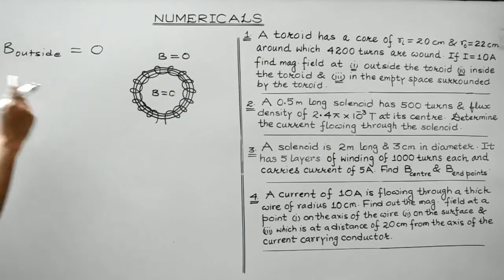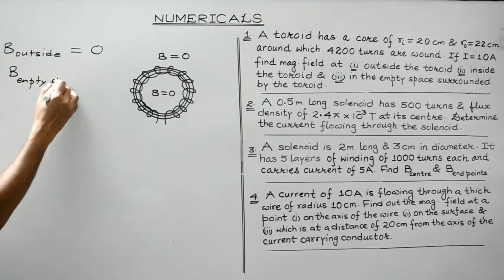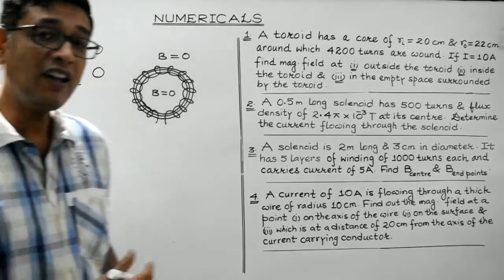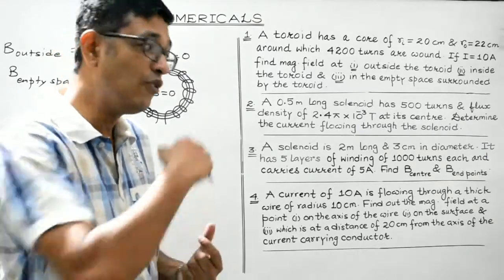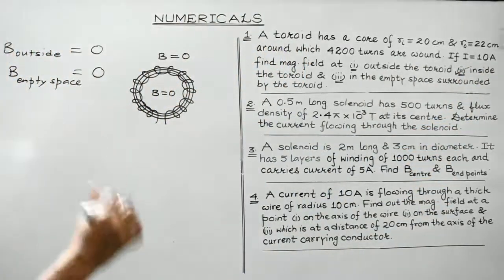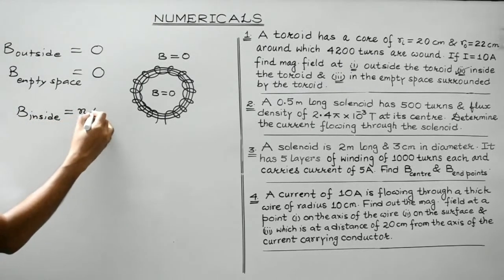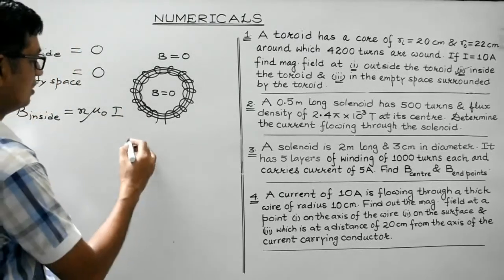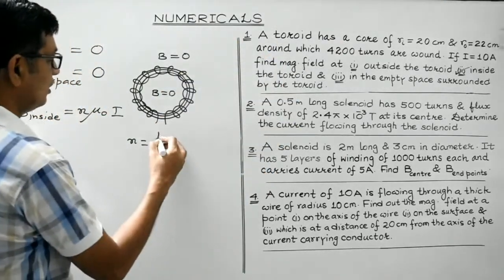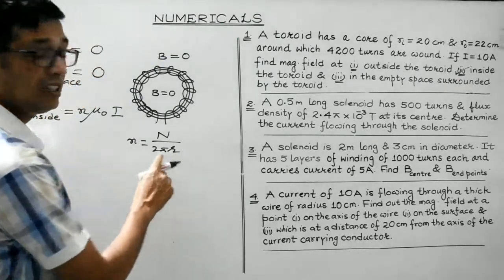The first part — outside — is zero, and the empty space surrounded by the toroid also has magnetic field zero, because the magnetic field has remained confined within the current-carrying solenoid. So we are left with only the second part: the magnetic field inside the toroid. The formula for the magnetic field inside the toroidal solenoid is B = nμ₀I, where n is the number of turns per unit length — here the length is the circumference of the toroid.